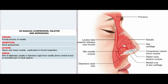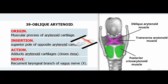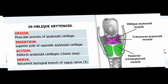39. Oblique Arytenoid. Origin: Muscular process of arytenoid cartilage. Insertion: Superior pole of opposite arytenoid cartilage. Action: Adducts arytenoid cartilages, closes rima glottidis. Nerve: Recurrent laryngeal branch of vagus nerve (X).